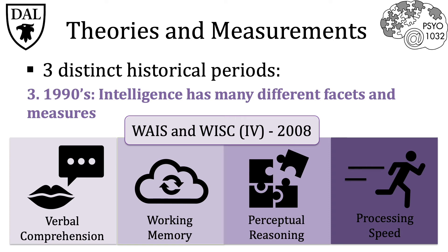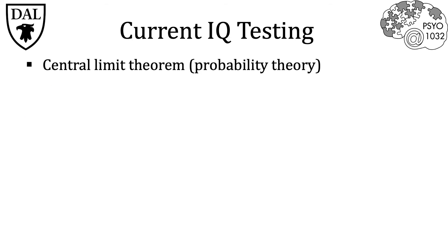Now that we understand what current intelligence tests are measuring, it's important to look at how individuals are scored and ranked. We cannot describe the scoring of IQ tests without first discussing the central limit theorem, which is also part of probability theory. The central limit theorem states that a group of independent, random variables of a significant quantity will be normally distributed.